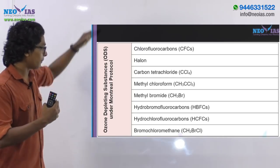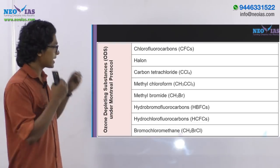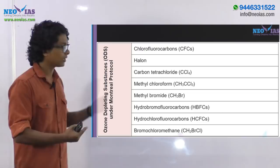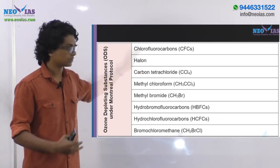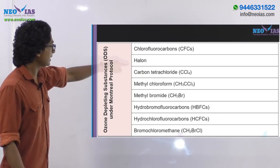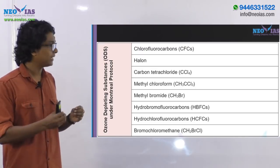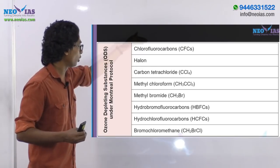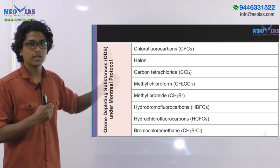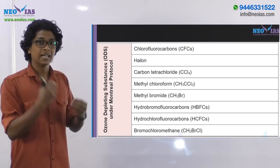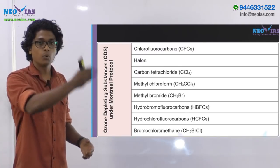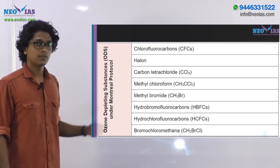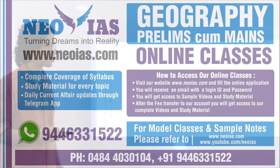It is a bit difficult to remember all of these names, but you can always think of chlorofluorocarbons as obviously being under the Montreal Protocol. Halons means gases having halogens in them — such as chlorine, bromine, and fluorine — which are very reactive and can disintegrate the ozone molecules. These are the gases being regulated under the Montreal Protocol.